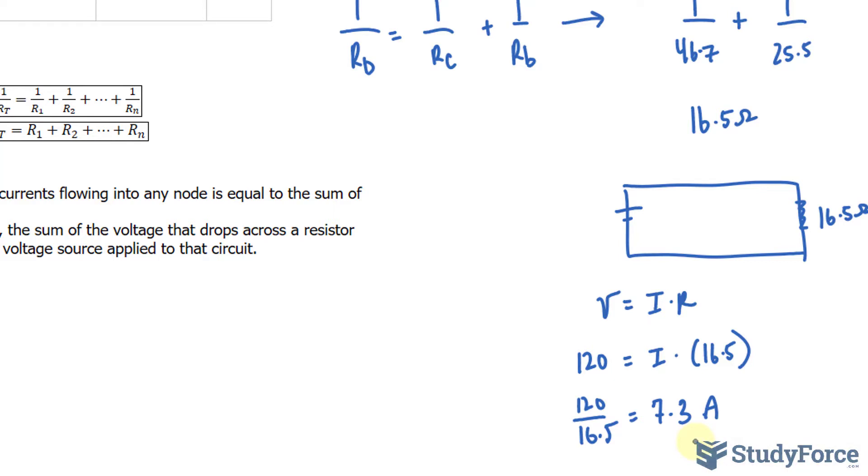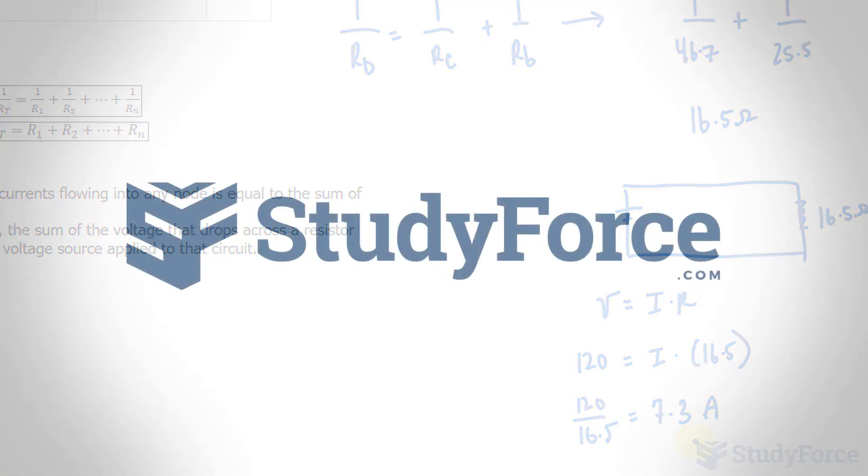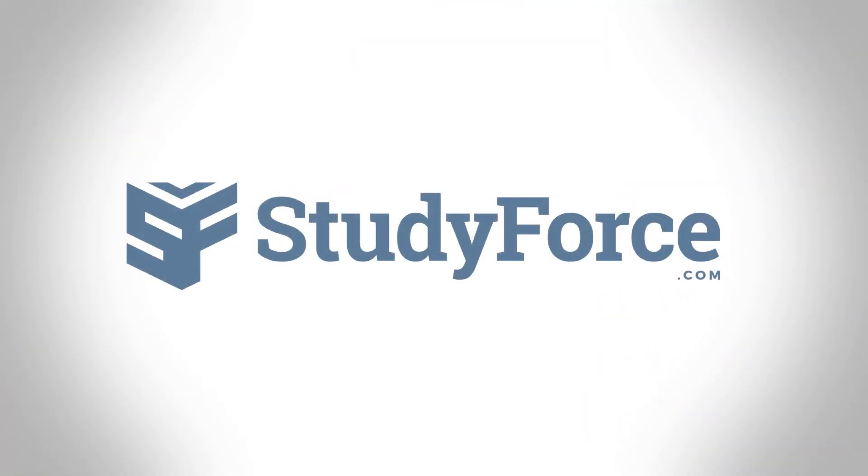So that concludes part one of this question. In part two, I'll show you how you can use this information to calculate the individual resistance and current along each resistor in this circuit. Hope you've learned something so far, and we'll see you soon.